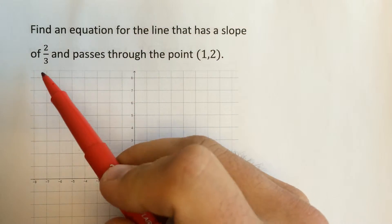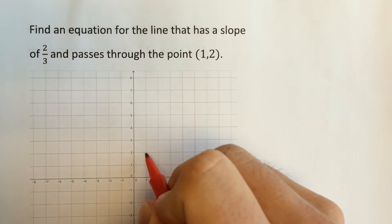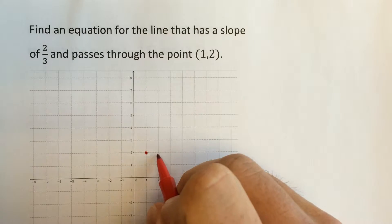Let's find the equation for the line that has the slope of two-thirds and passes through the point (1,2). So let's plot that point. One, two is right there.